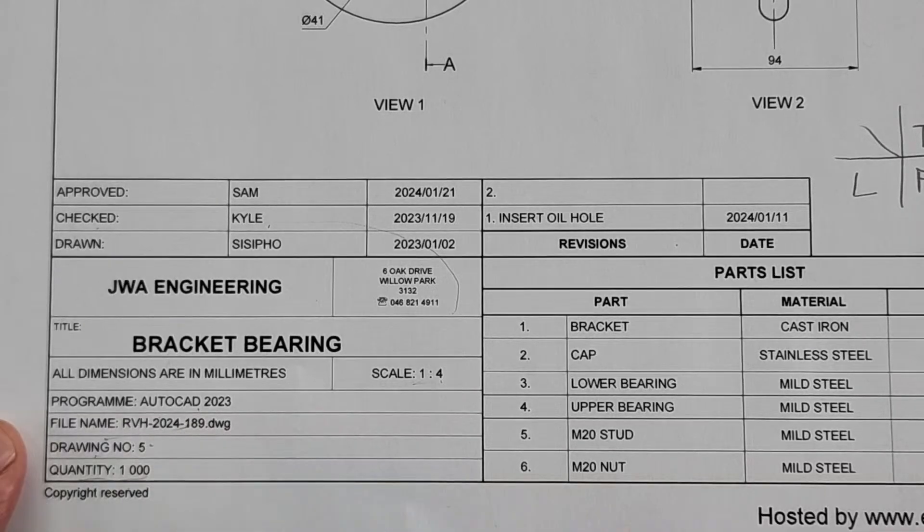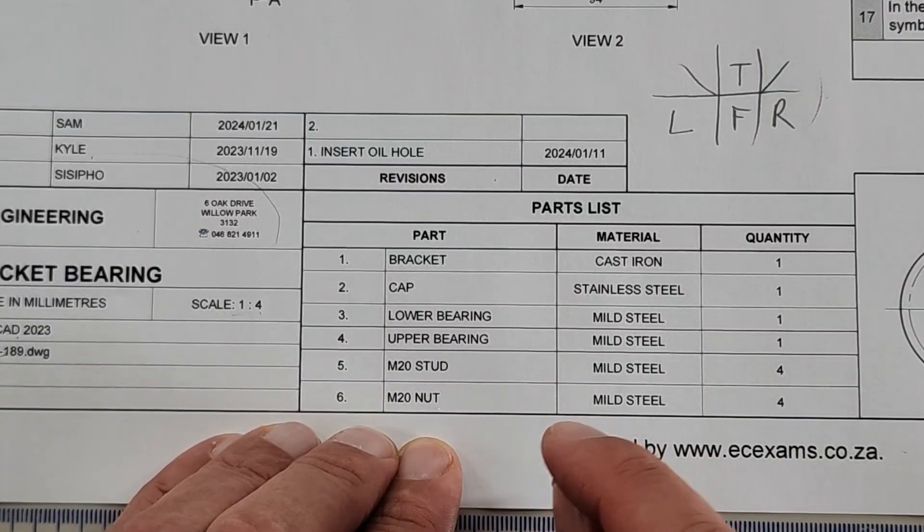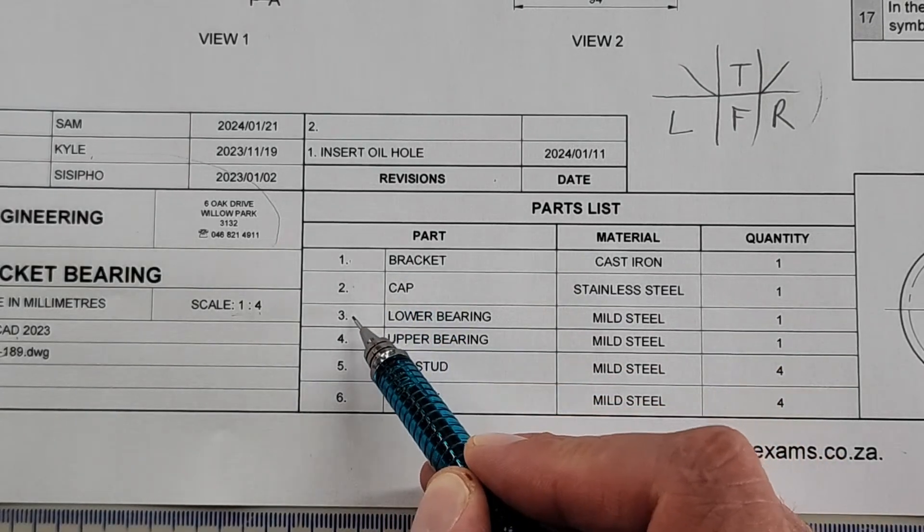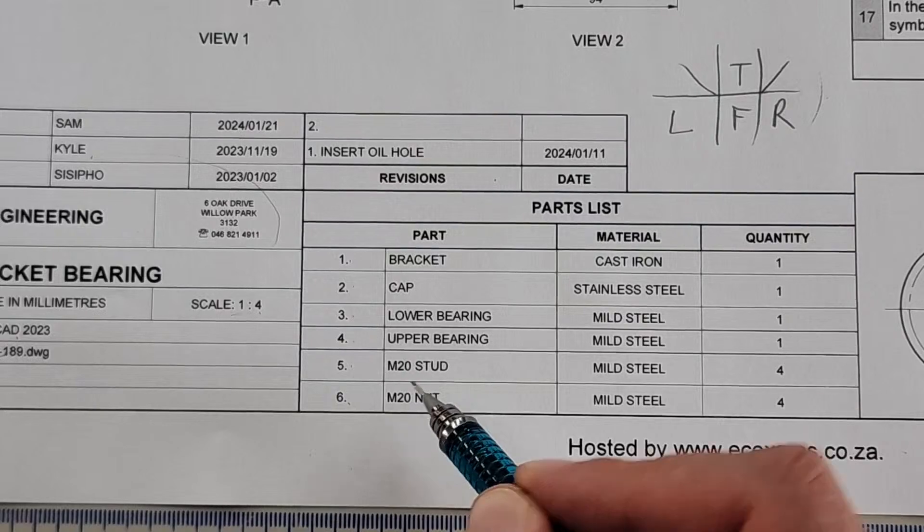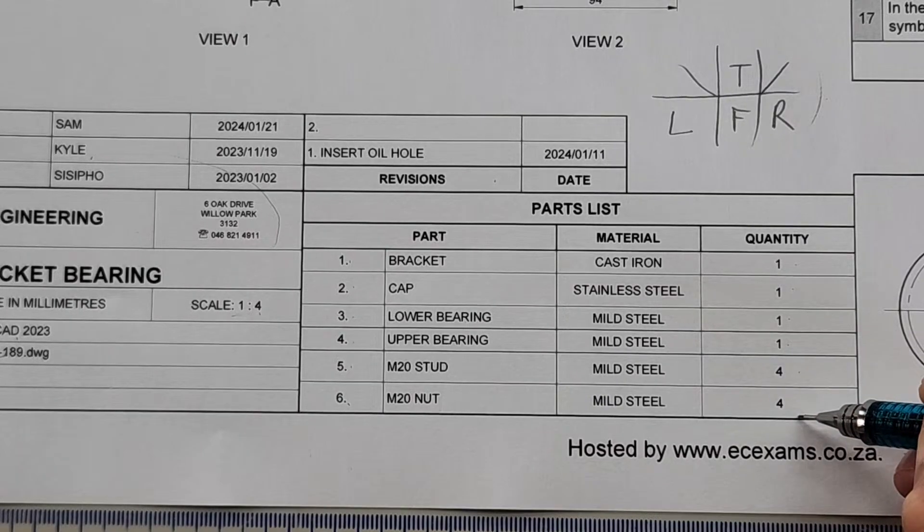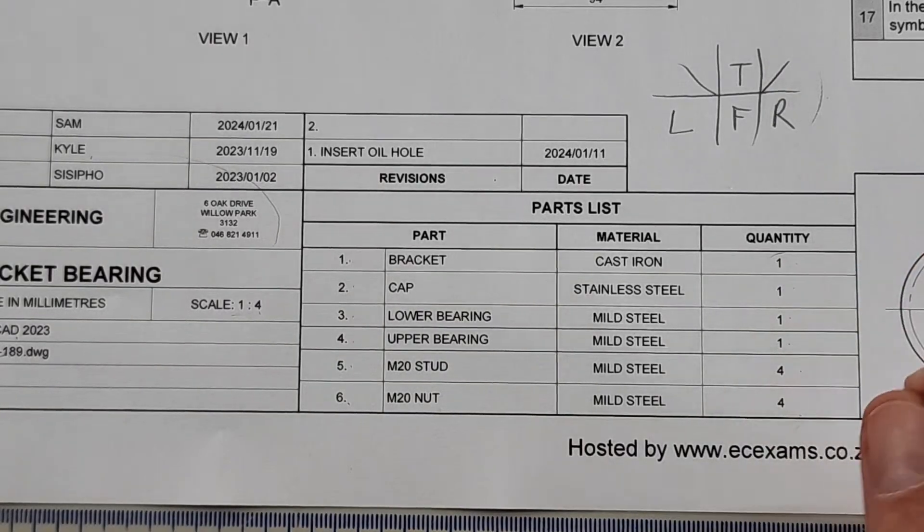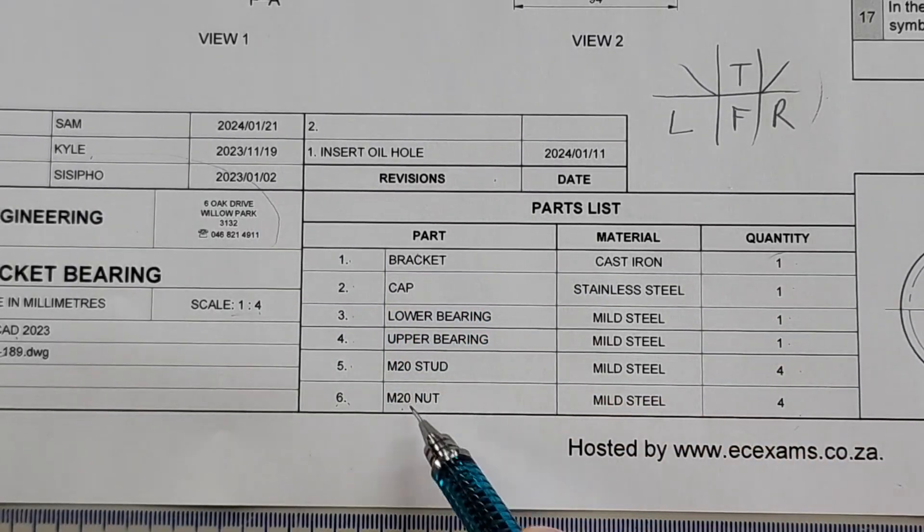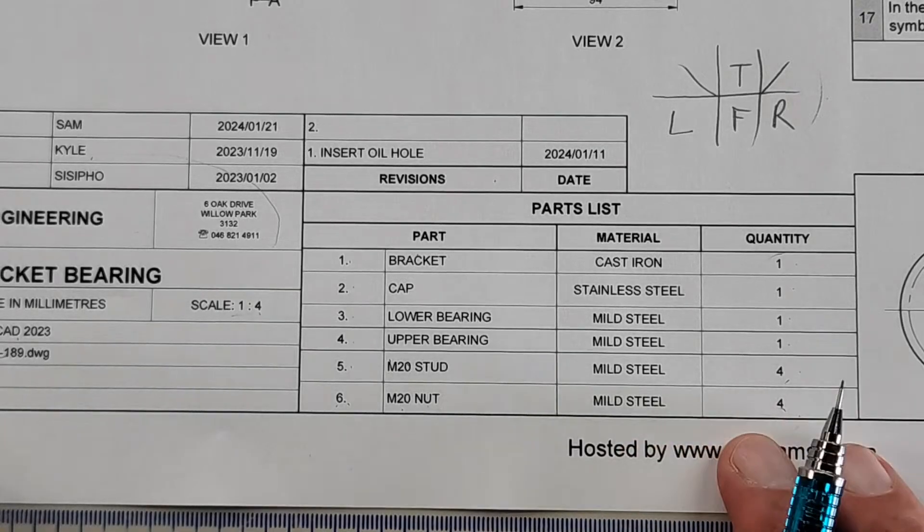Question four: how many bracket parts are used? Now here, ladies and gentlemen, you have to read clearly. This question asks how many parts are used to manufacture the bracket. If you look here, how many different parts do we have? One, two, three, four, five, six. If you write six, it's going to be wrong because the question reads how many parts. So you have to go and look at the quantity count: one, two, three, four, plus another four, plus another four. The total amount is twelve. If the question read how many different parts, it would have been six, because there's four M20 nuts, four M20 studs, and that gives us twelve in total.